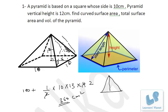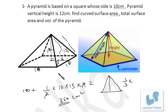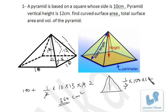For curved surface area, we just take the 260 part, leaving out the 100 which is the area of the square base. So curved surface area is 260 cm² and total surface area is 360 cm². For the volume, the formula is one-third times base area times height: (1/3) × 100 × 12 = 400 cubic centimetres.